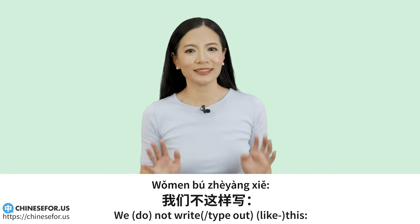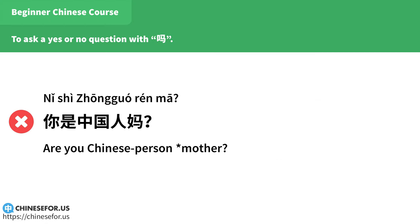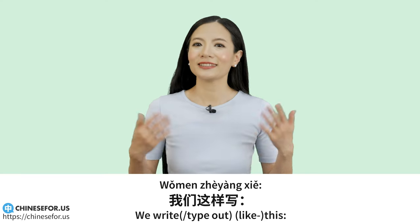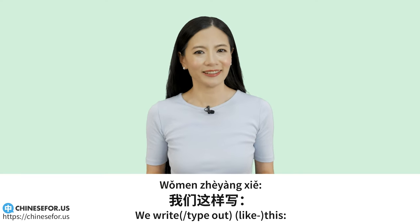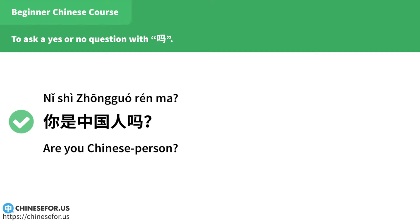To ask a yes or no question with 吗: 我们不这样写「你是中国人吗?」（incorrect character form），我们这样写「你是中国人吗？」